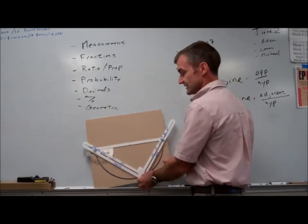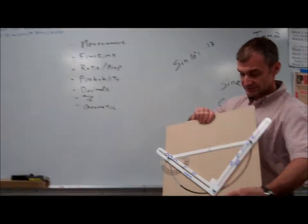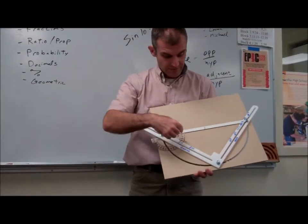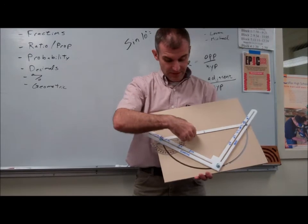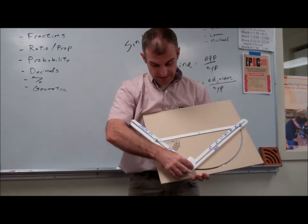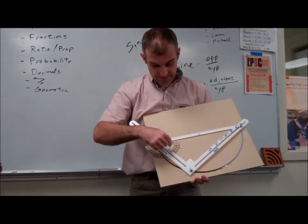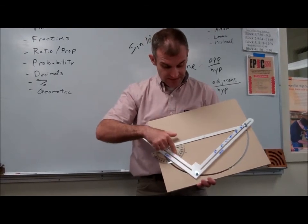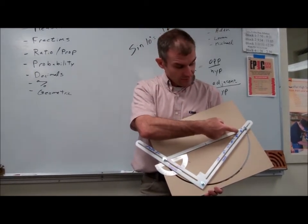So what this really does is it's basically a trig calculator. If you want an angle, and I want to know the ratio of the opposite to the hypotenuse, I just move this until that angle is lined up, 60 degrees. The sine of 60 is somewhere about 0.8.